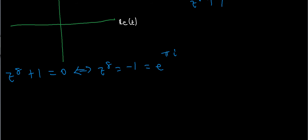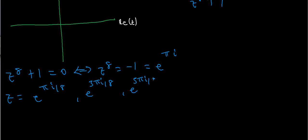Using De Moivre's theorem, I find that z could be e to the π i over 8, e to the 3π i over 8, e to the 5π i over 8, and so on until e to the 15π i over 8. I could keep going, but then I'd get back to e to the π i over 8 since e to the ix is 2π i periodic.